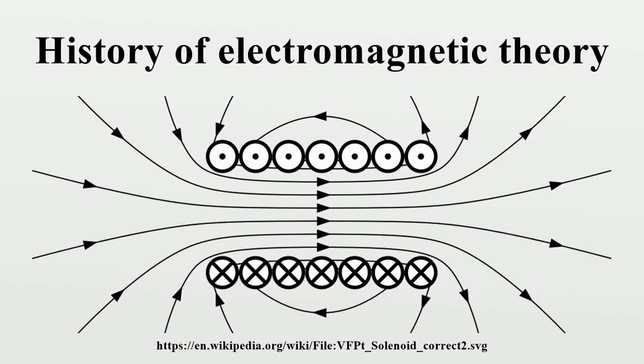For a chronological guide to this subject, see Timeline of Electromagnetic Theory. The history of electromagnetic theory begins with ancient measures to deal with atmospheric electricity, in particular lightning. People then had little understanding of electricity and were unable to scientifically explain the phenomena.